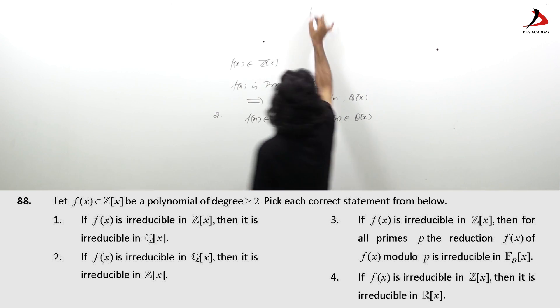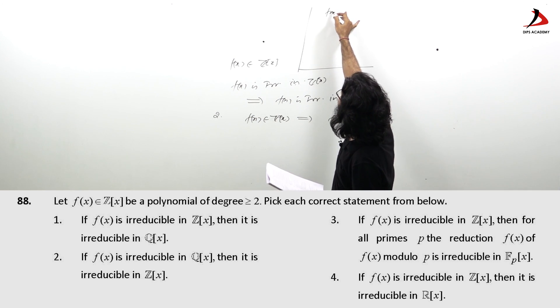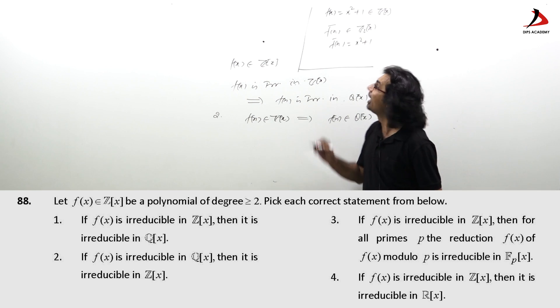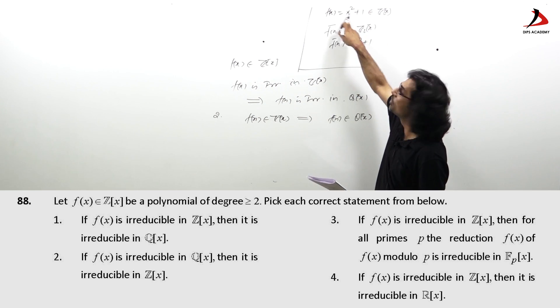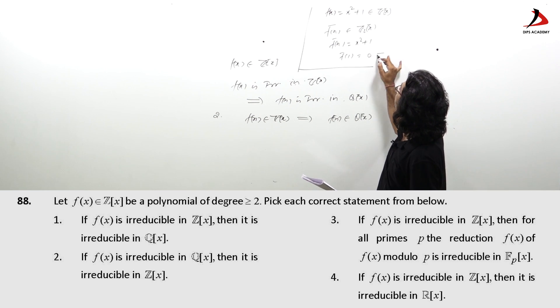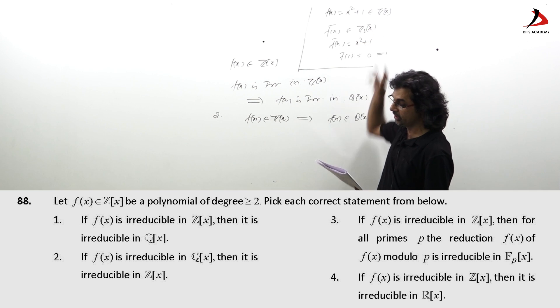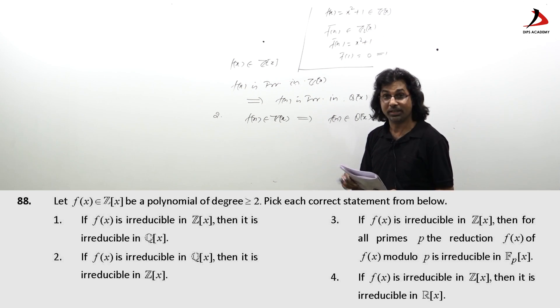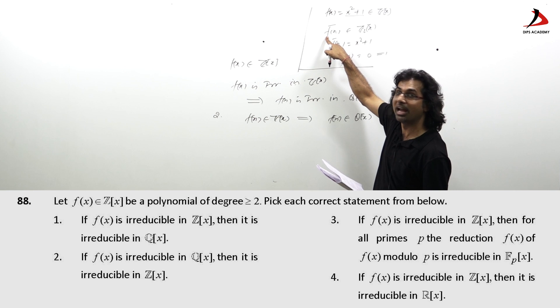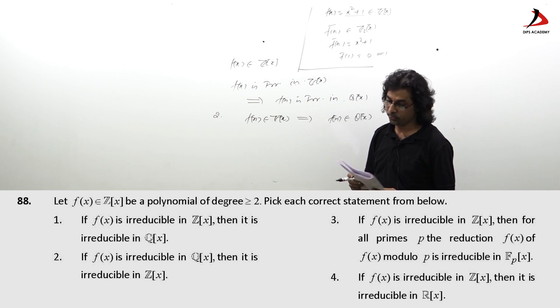Now for rest of the options we can easily eliminate by counterexamples. Just see take f(x) equal to x squared plus 1 it belongs to Z[x] and then f bar(x) belongs to Z2[x] and this f bar(x) is same as this obtained by reducing the coefficient modulo 2. So this f bar(x) this 1 equal to 0, so f bar(x) is reducible over Z2. The statement says if f is irreducible in Z then for all prime p the reduction f bar of f modulo p is irreducible in Fp. See this is irreducible over Z, but its reduction f bar is reducible so this option is incorrect just p equal to 2 negates the option.